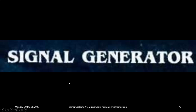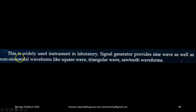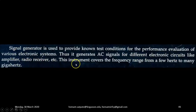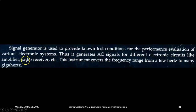Next, let's look at the signal generator, which is a widely used instrument in the laboratory. A signal generator provides sine waves as well as non-sinusoidal waveforms like square wave, triangular wave, and sawtooth waveforms. It is used to provide known test conditions for the performance evaluation of various electronic systems, generating AC signals for different electronic circuits like amplifiers, radio receivers, etc. This instrument covers the frequency range from a few hertz to many gigahertz.